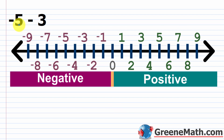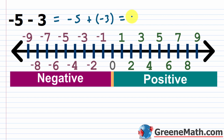For this problem we return to the number line. The leftmost number is now a negative, which actually makes it a little easier. Using the procedure: the leftmost number is negative 5, leave it alone. Change subtraction to addition. The number being subtracted is positive 3 — change it to its opposite, negative 3. So negative 5 minus 3 becomes negative 5 plus negative 3. Both signs are negative, so the answer is negative. Add the absolute values: 5 plus 3 is 8, giving negative 8.